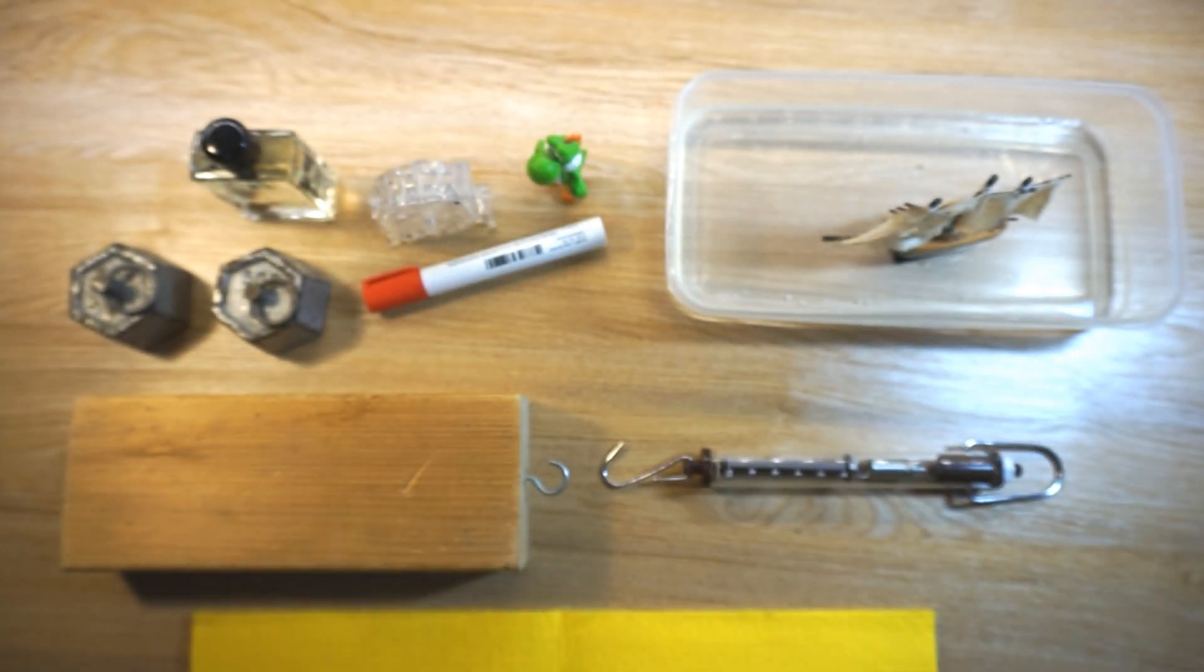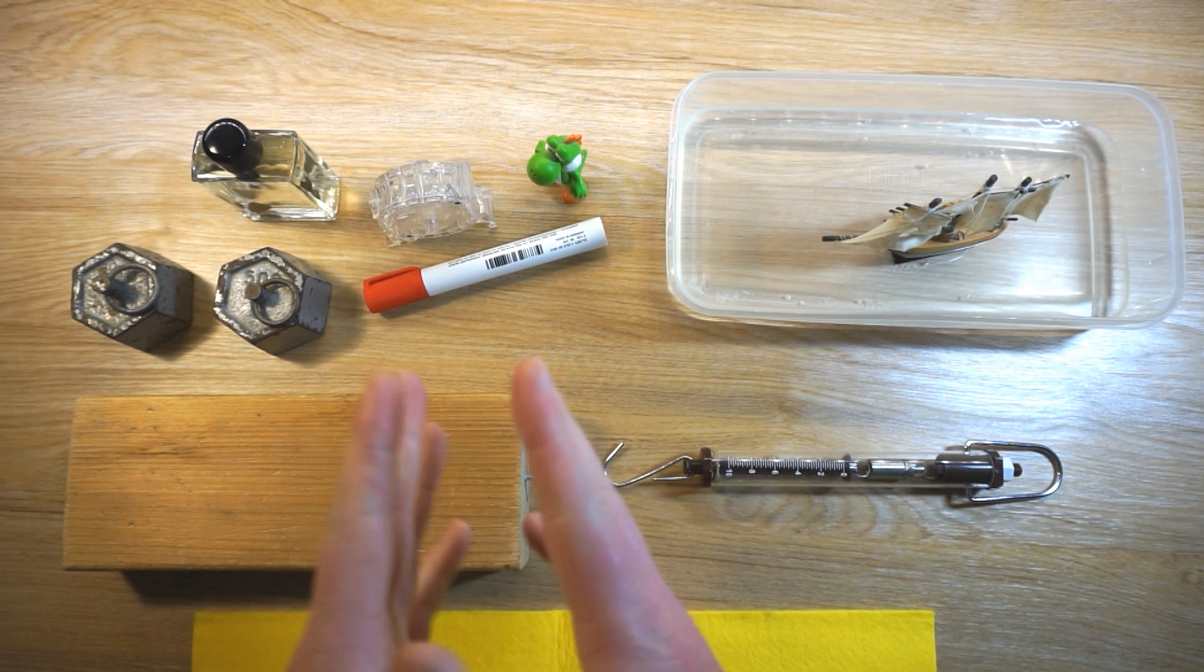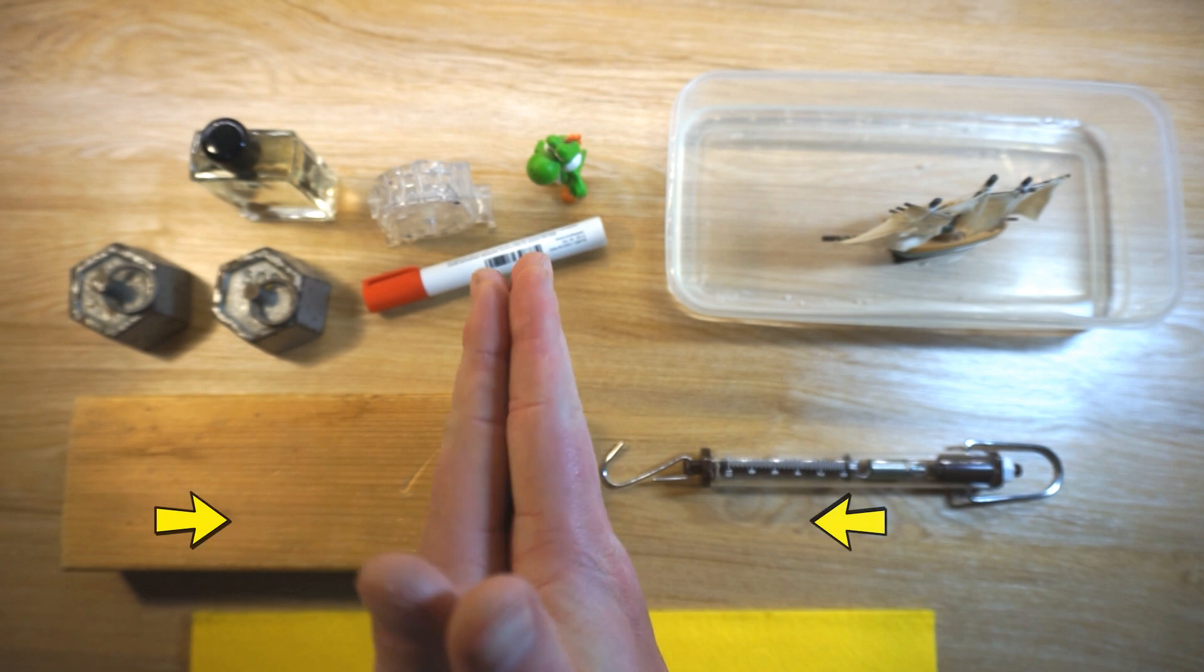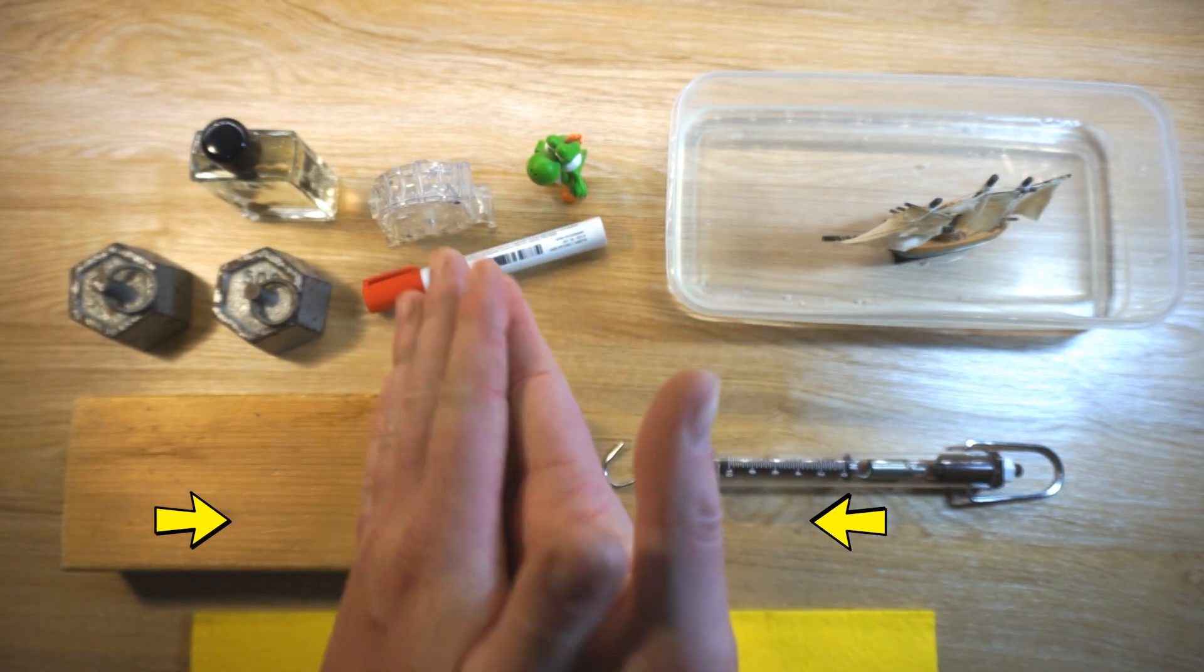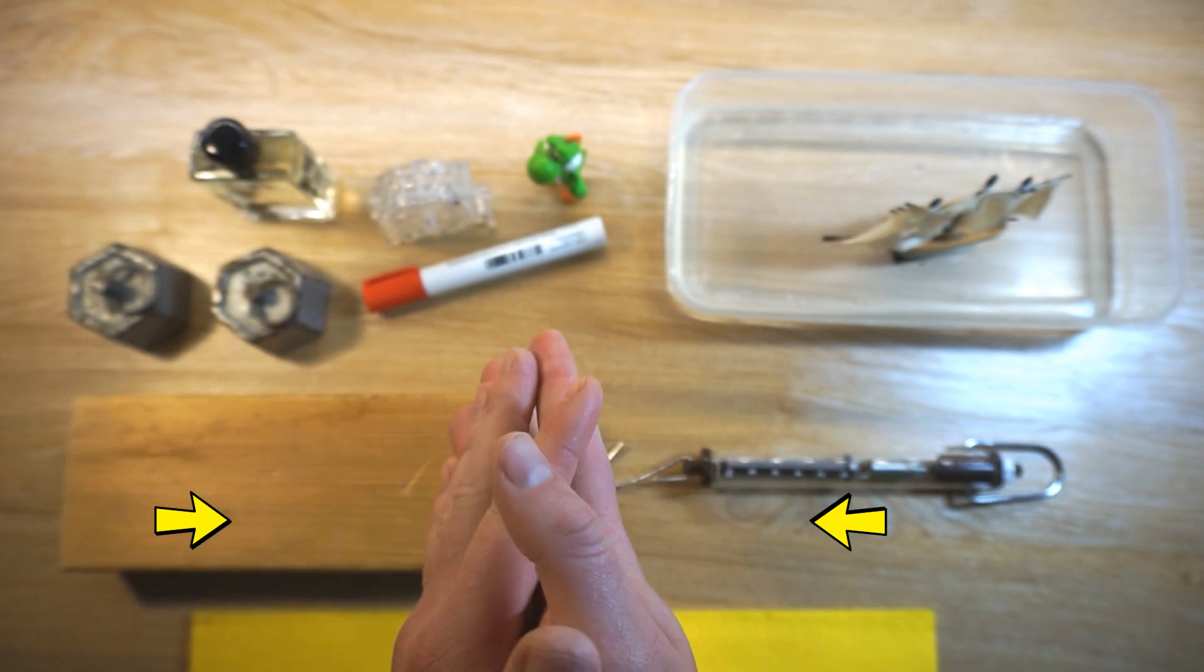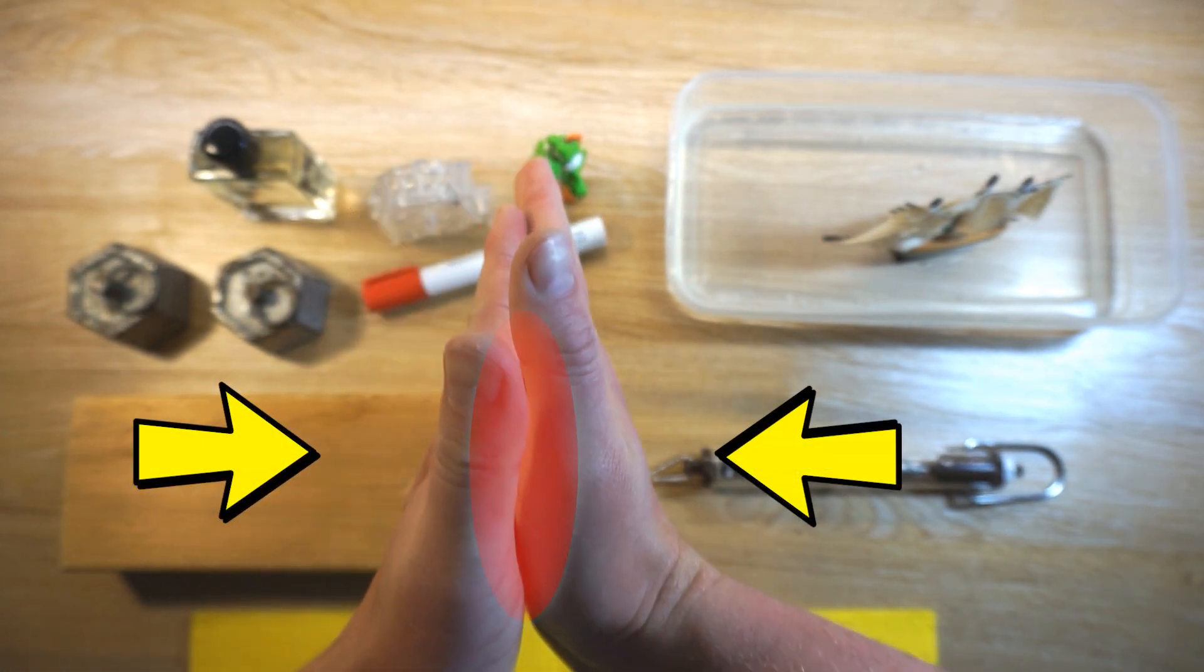Today I'm going to demonstrate two ways that we can increase the level of friction. The first way is to increase the amount of force between the two surfaces. If you rub your hands together really lightly, it generates a little bit of friction and heat, but if you apply more force between your hands, it generates more heat because there's more friction.